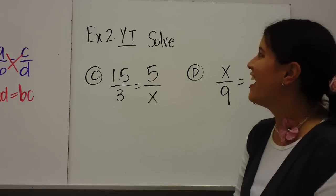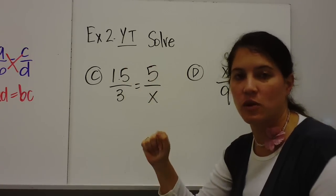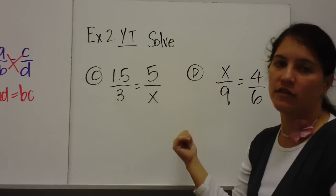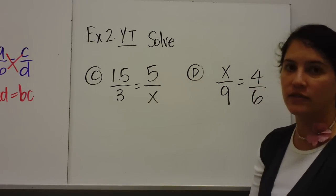Example 2, you try. Solve these two proportions on your own, just like we did in example 1. You cross multiply, and then you divide. So solve these two, pause it, and then press play when you're ready to see the answer.